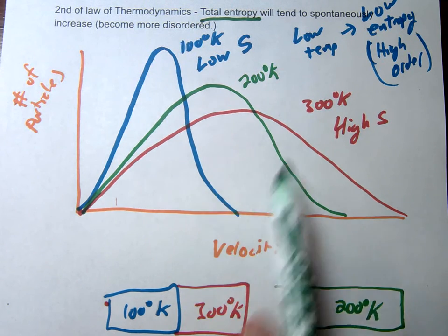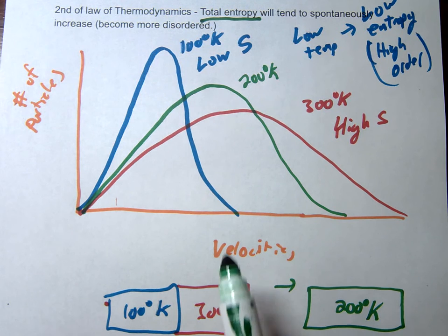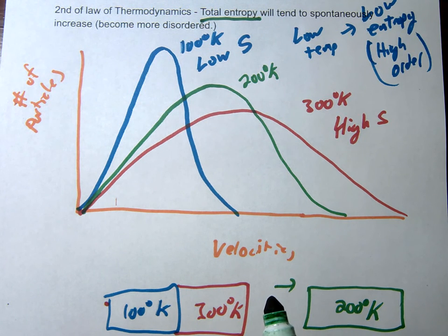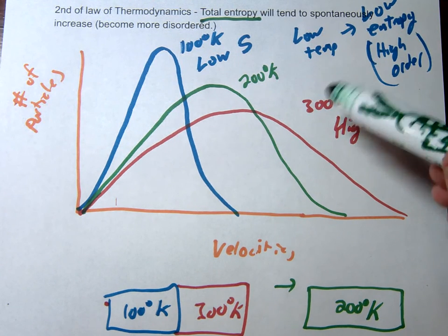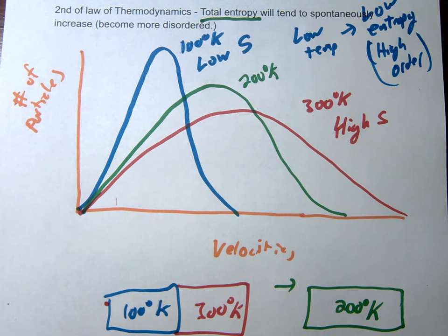So that's why you can sometimes have individual things actually decrease in entropy, become more ordered. But as a whole, especially if you think of the universe as a whole, it's always going to move towards that state of increasing entropy.